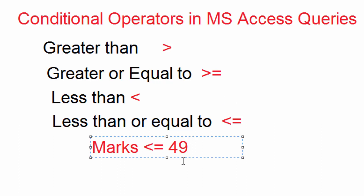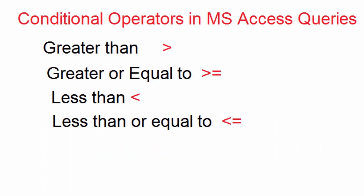In this case we want to see if there is any student who scored 49 or anything less than 49, and probably that person can be given a fail grade. These operators are very important and they are used in queries in Access. Another thing I want to show you is we can check if something is NOT a value.